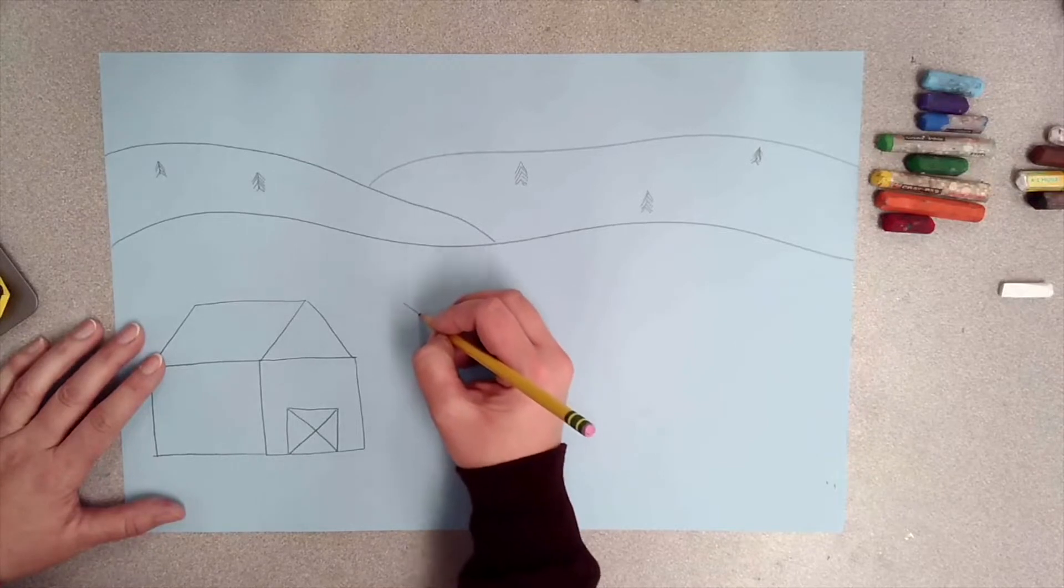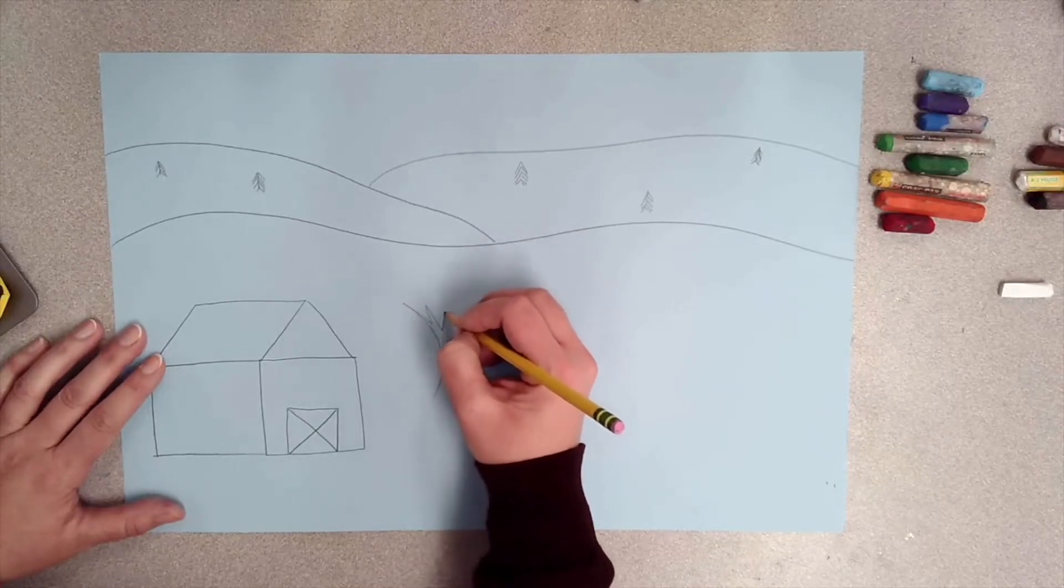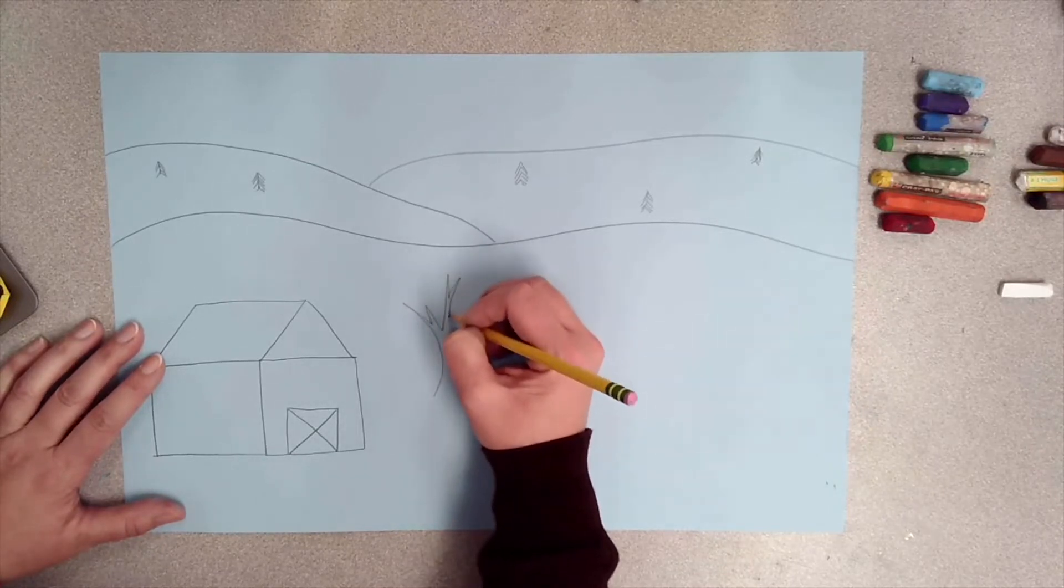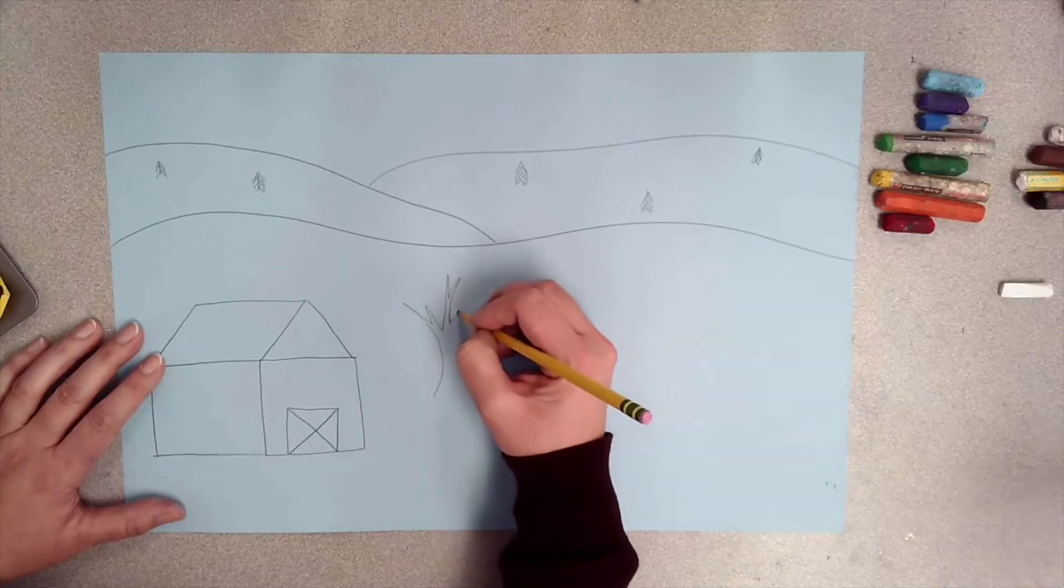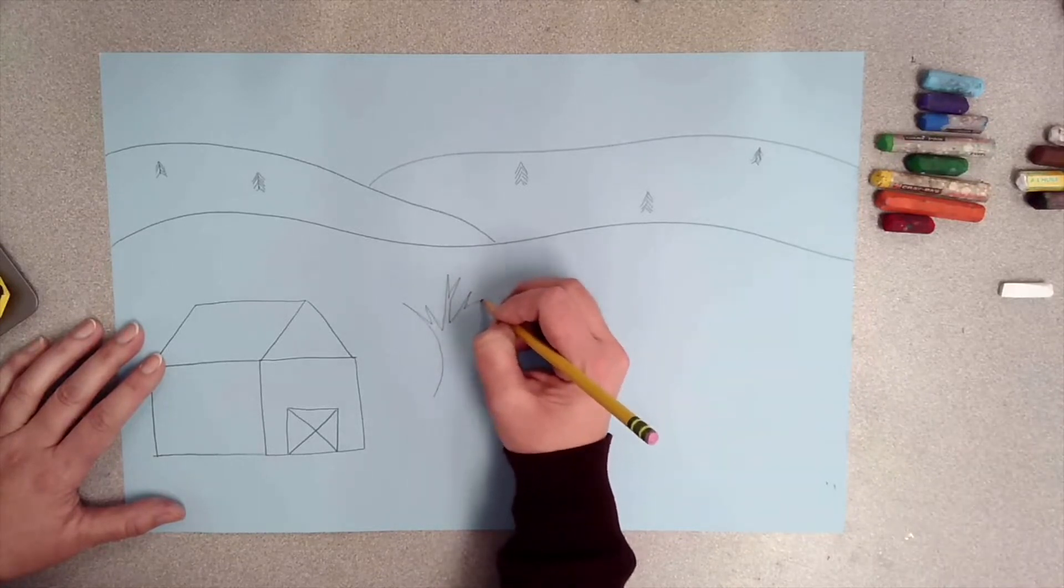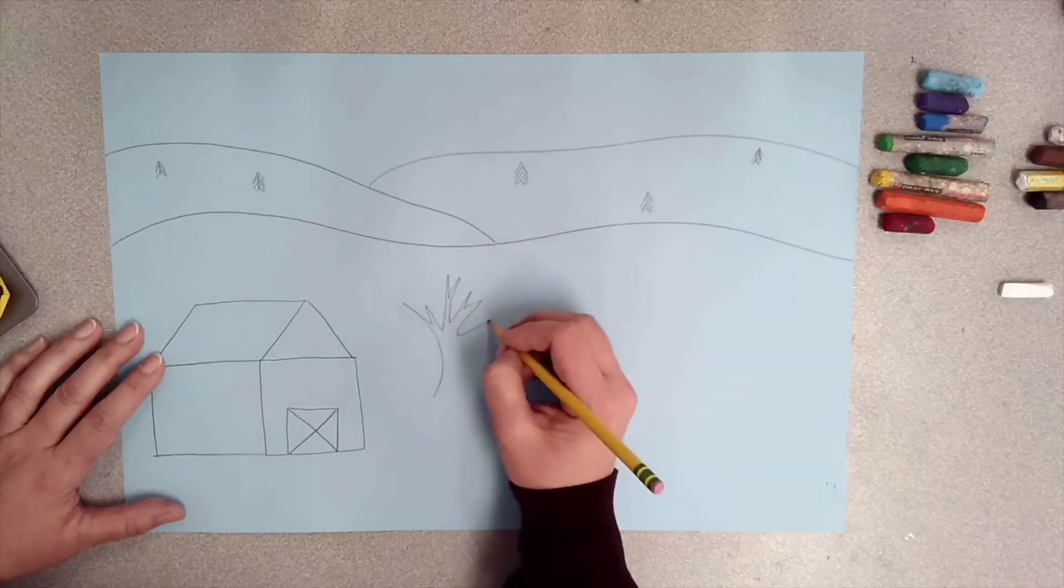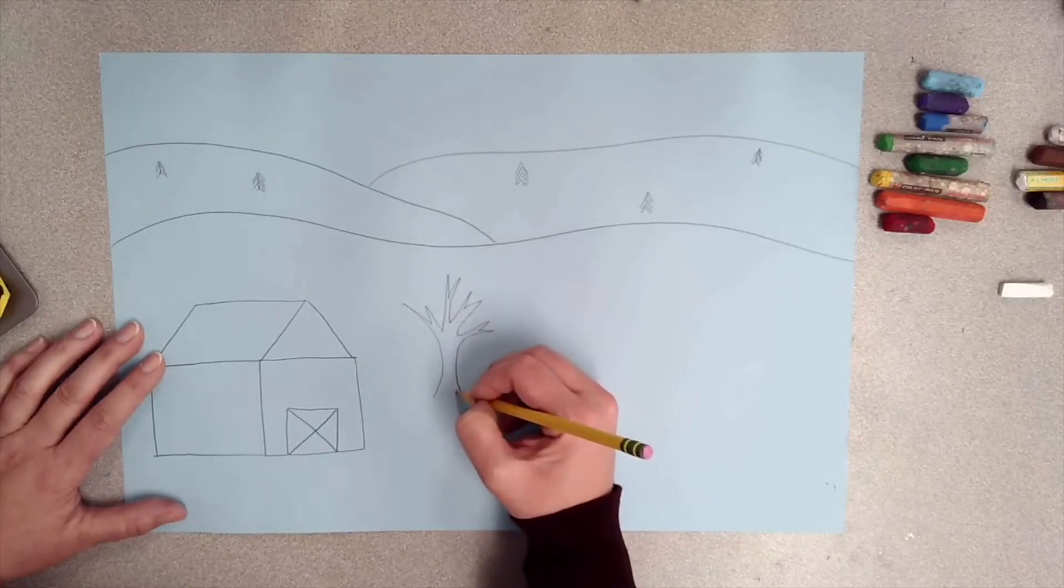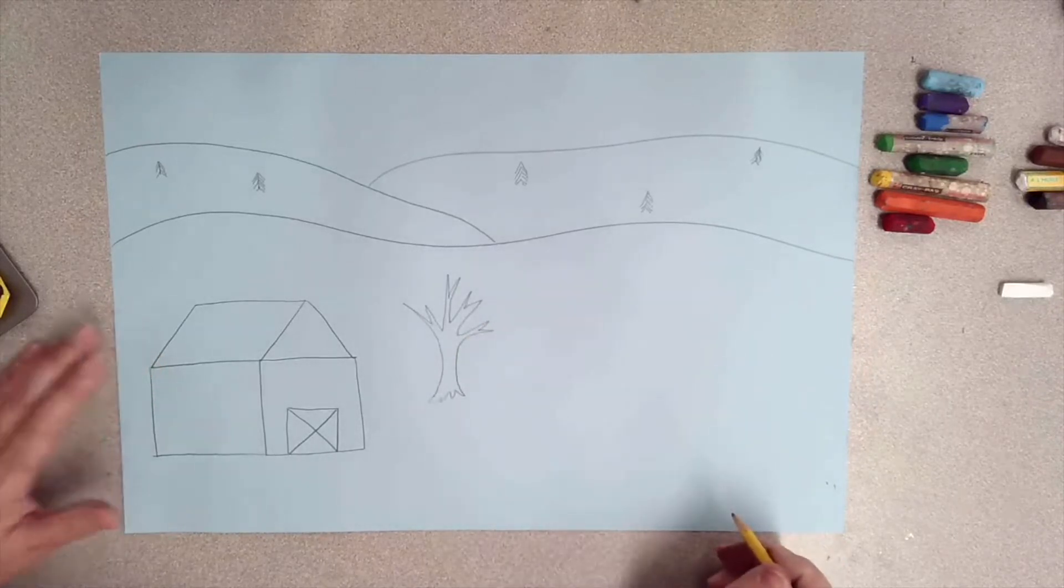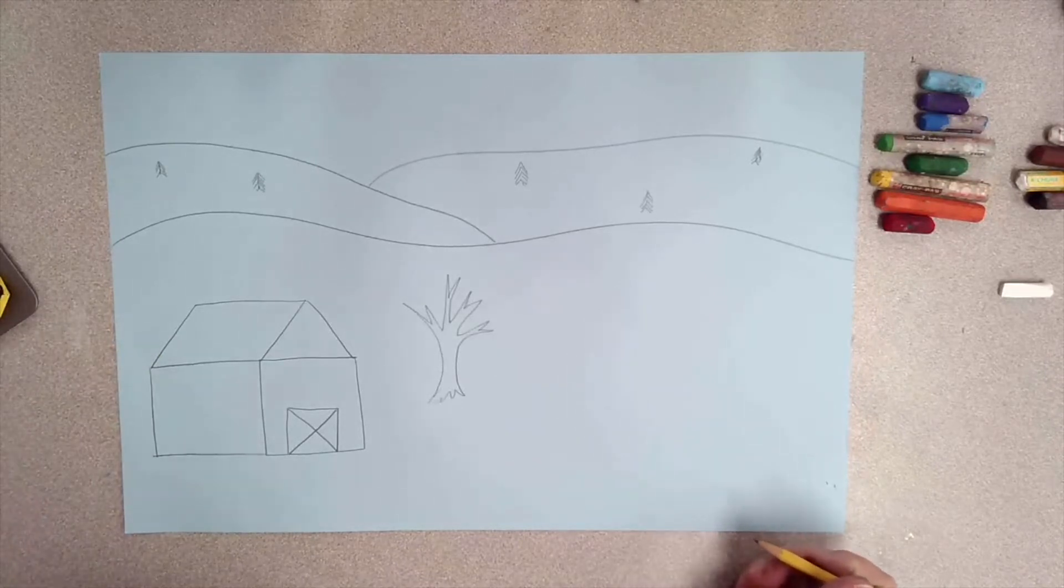I wanted to add a tree that didn't have any leaves on it anymore because it is the middle of winter. You wouldn't see trees with leaves on them. Again, I didn't want to add too many branches because my oil pastel's gonna be kind of thick and I don't think I could get the details that I want.